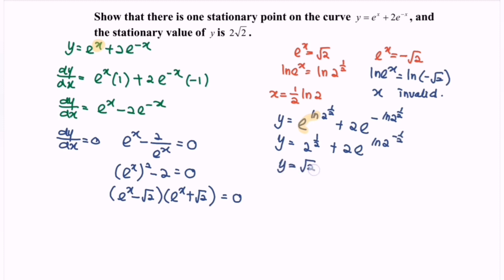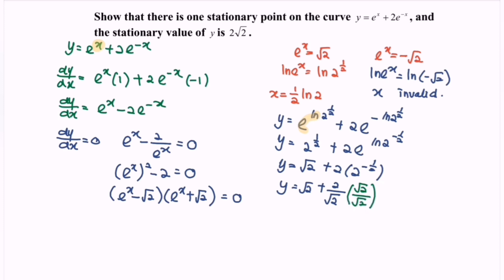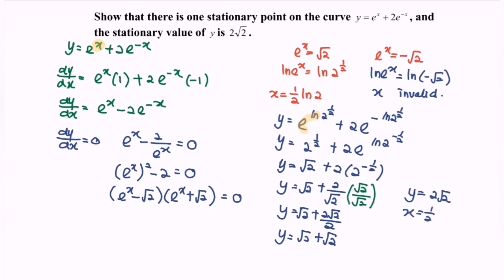So y = √2 + 2·(2^(−1/2)) = √2 + 2/√2. Multiply by √2/√2 to rationalize: y = √2 + 2√2/2 = √2 + √2 = 2√2. Therefore, the stationary value of y is 2√2 when x = (1/2)ln 2, and the statement has been shown.